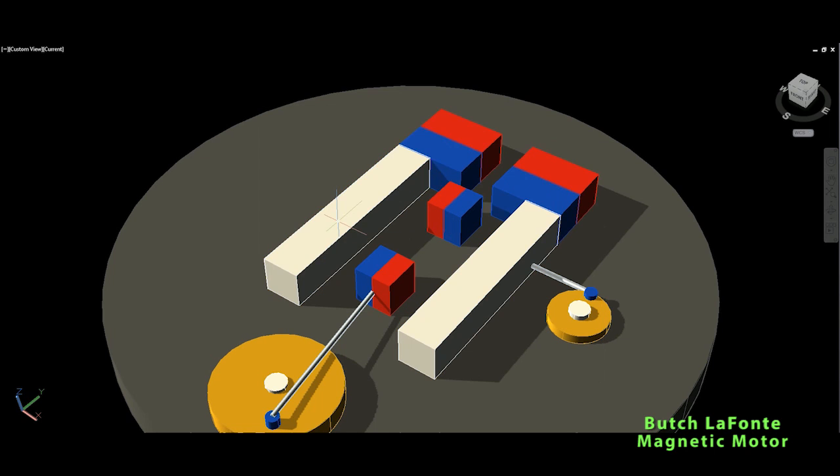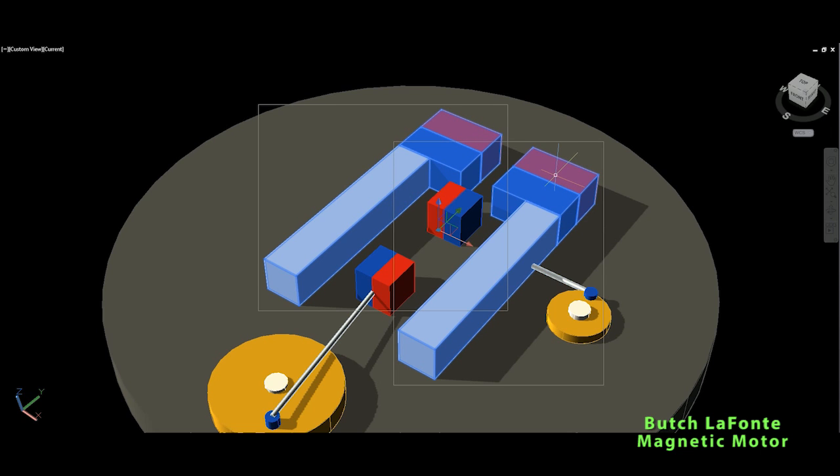So the white part is the steel rods, basically just steel rods. On the top these two magnets are fixed and they are much better to be electromagnets and I will describe later why.